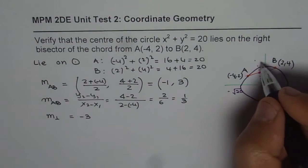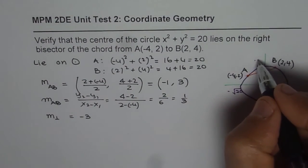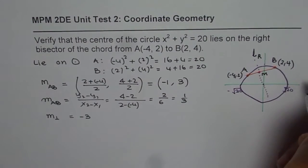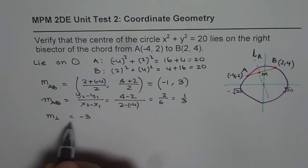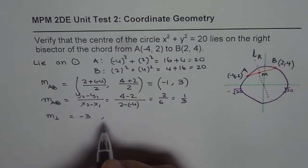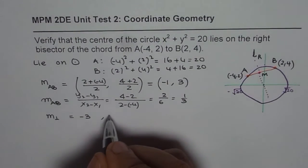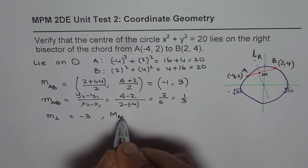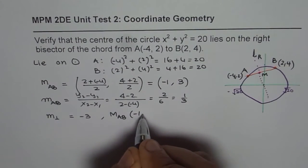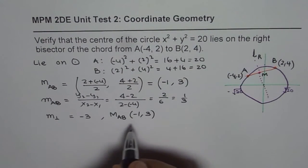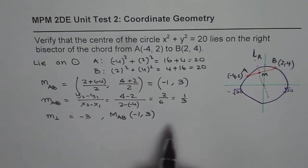So we know the slope of the right bisector. Let me call it as line R as the right bisector, slope of -3, and it goes through the midpoint which we just found is (-1, 3). Knowing this, we can find equation of the right bisector, okay. So let's find equation of right bisector.